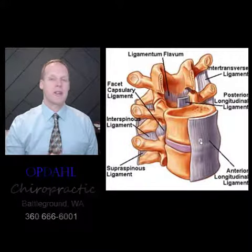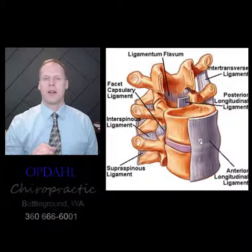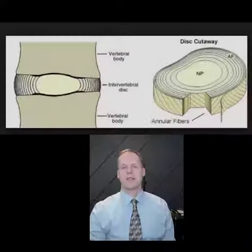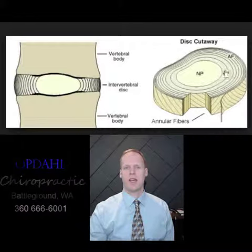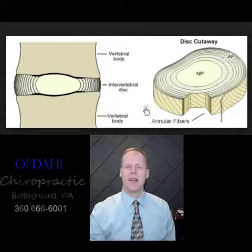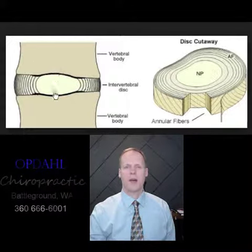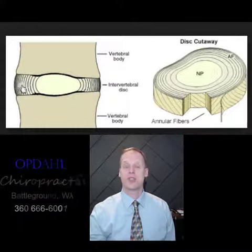If you tear one of the ligaments, or even worse, if you tear the disc, that's going to be a source of pain, and I'll explain why and how you fix it. This is a picture of the disc. The disc is made of a center jelly, and then it's got outer rings called the annular fibers. The annular fibers are just ligaments — like all other ligaments in the body, they're made of type 1 collagen and run at a diagonal position in sheets or layers.